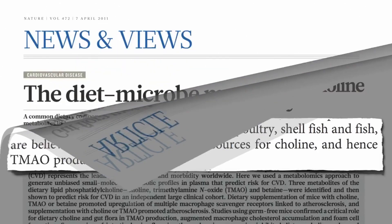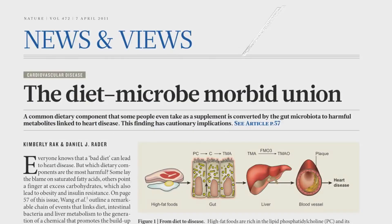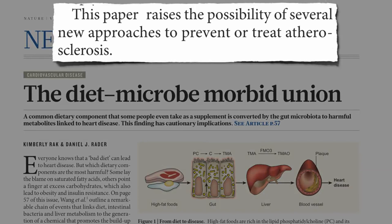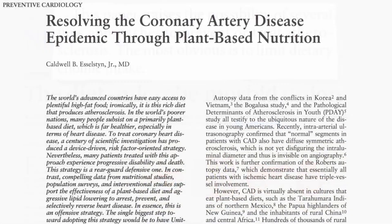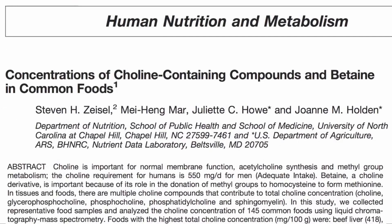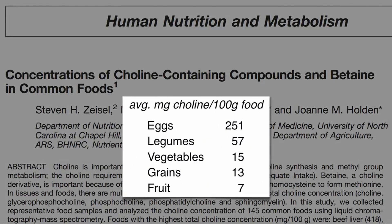So it's not just red meat. The good news is that this may mean a new approach to prevent or treat heart disease — the most obvious of which would be to limit dietary choline intake. But if that means decreasing egg, meat, and dairy consumption, then the new approach sounds an awful lot like the old approach. Unlike carnitine, we do need to take in some choline — so should vegans be worried about the choline they're getting from beans, veggies, grains, and fruit?